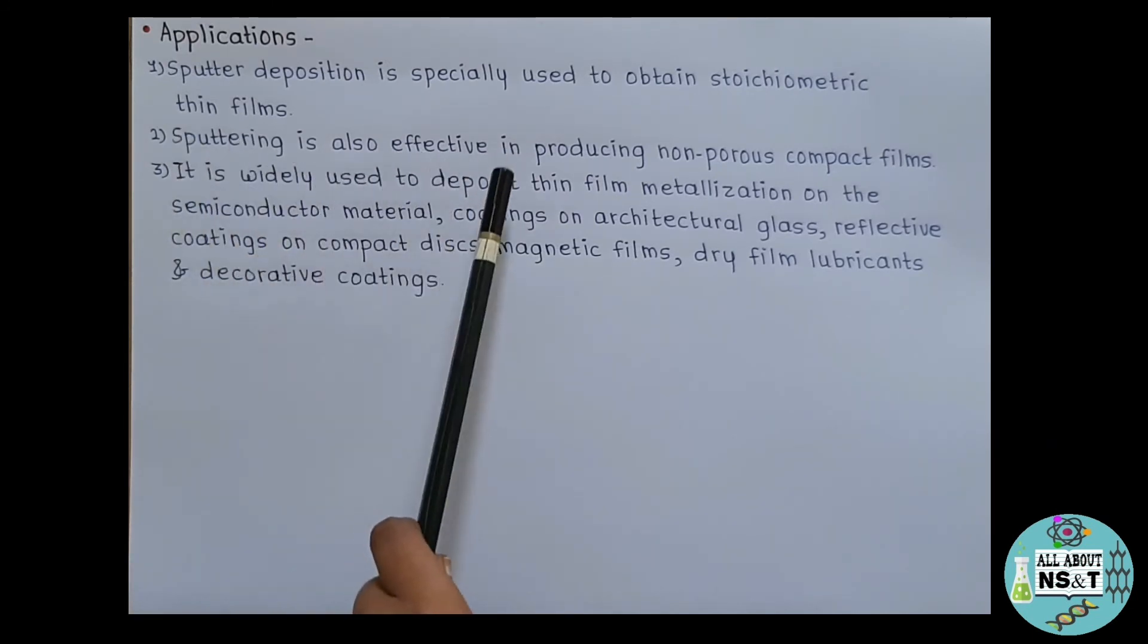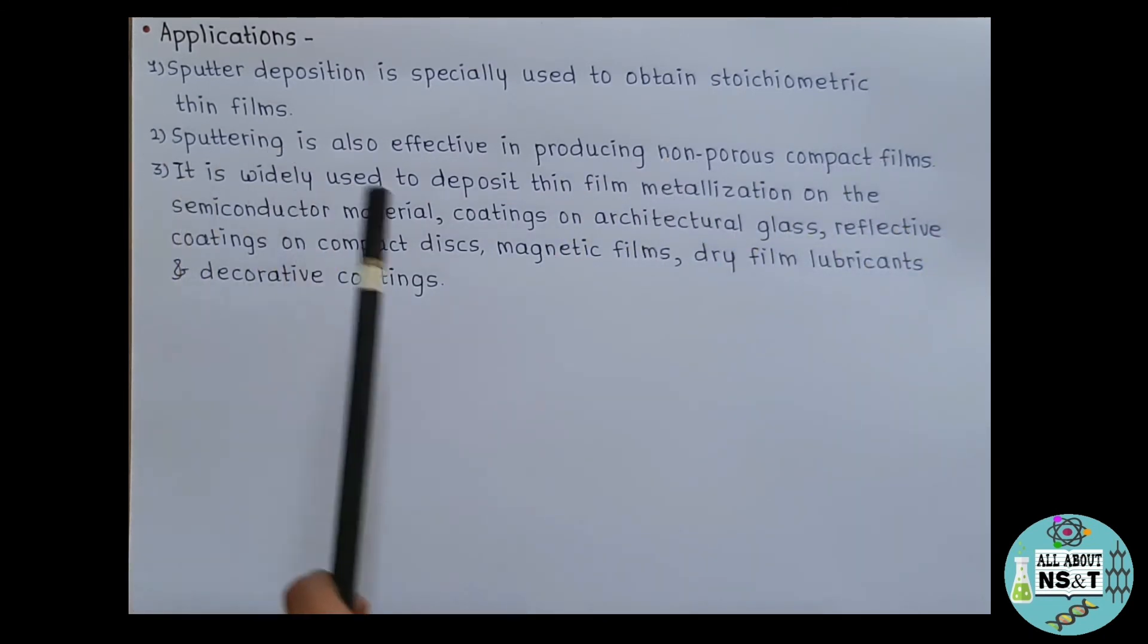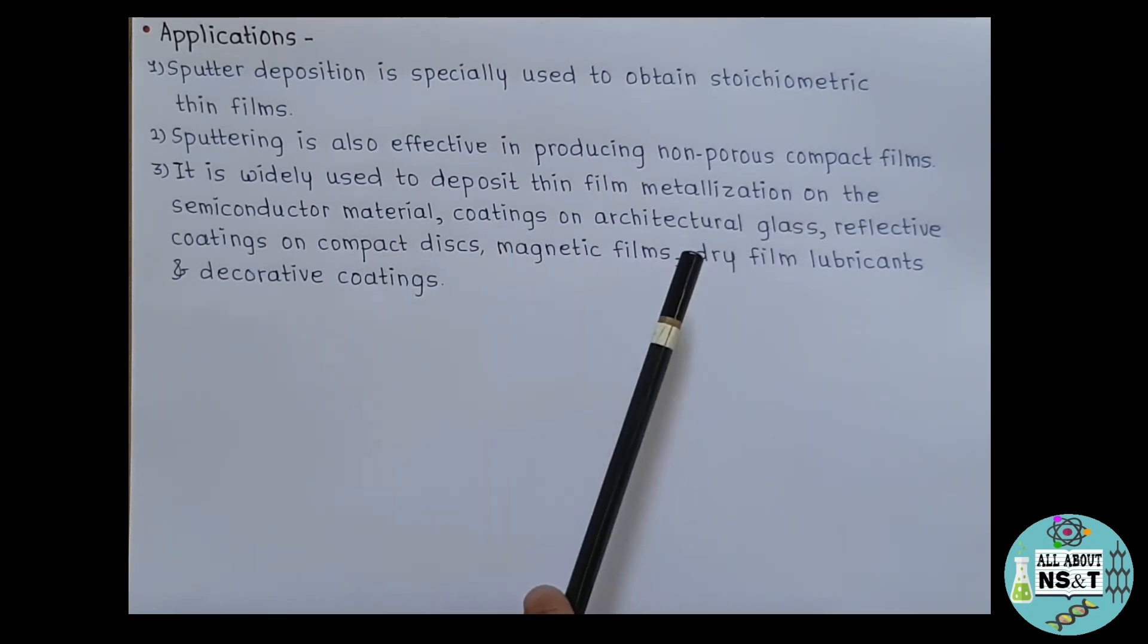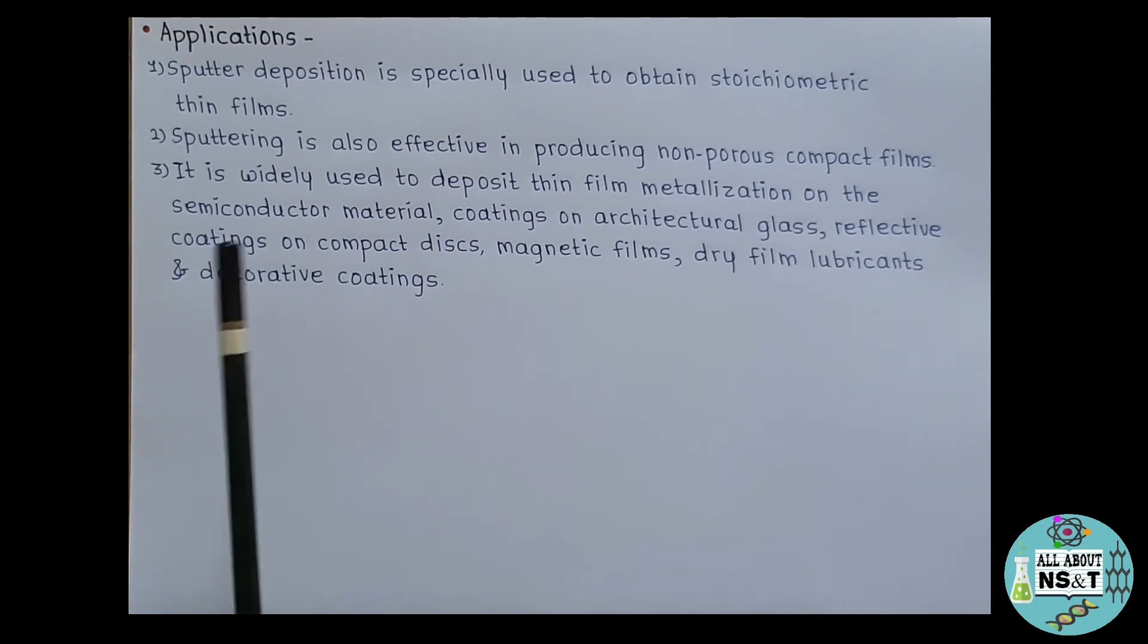Sputtering is also effective in producing non-porous compact films. It is widely used to deposit thin film metallization on semiconductor materials, coatings on architectural glass, reflective coatings on compact discs, magnetic films, dry film lubricants and decorative coatings.